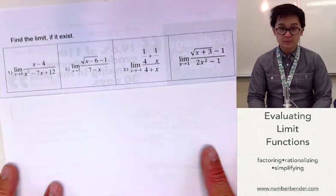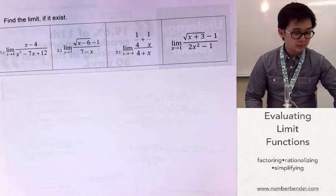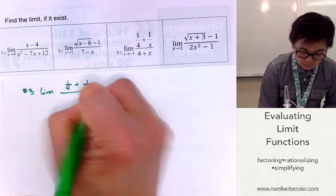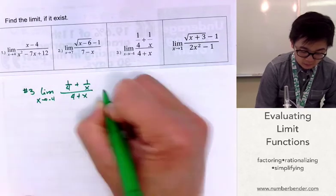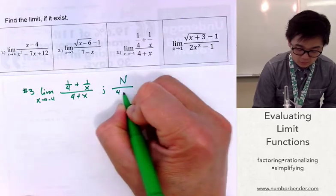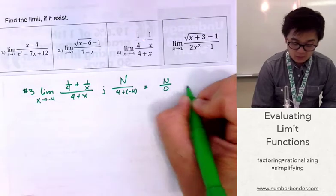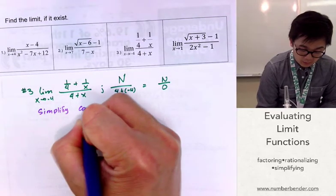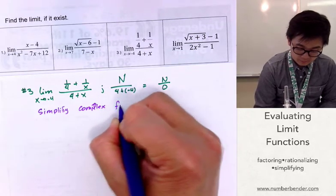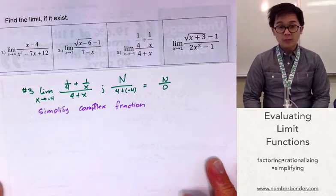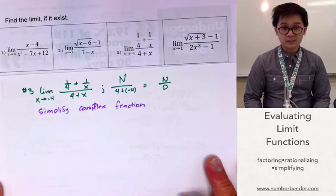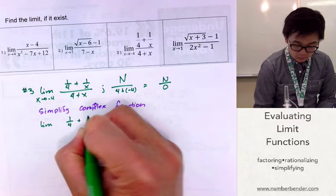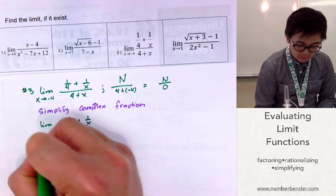For problem number 3, we have a complex fraction. We have the limit of 1 over 4 plus 1 over x, all divided by 4 plus x, as x approaches negative 4. Checking by substitution, 4 plus negative 4 gives 0, so this is undefined at negative 4. We're going to simplify the complex fraction to modify the function.